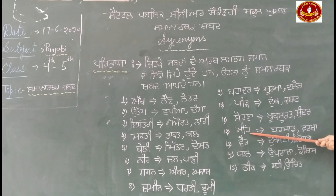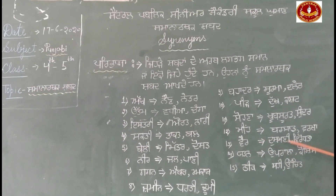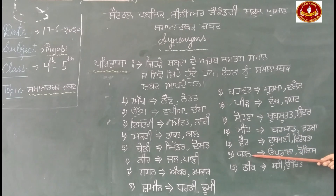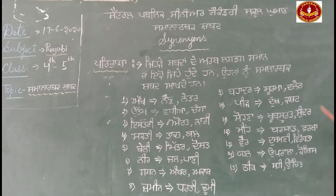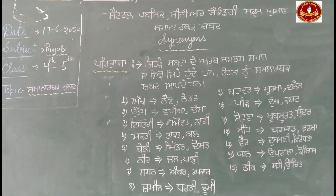ਨੰਬਰ 12: ਬਰਸਾਤ, ਮੀਂਹ, ਵਰਖਾ। ਨੰਬਰ 13: ਵੈਰ, ਦੁਸ਼ਮਣੀ, ਵਿਰੋਧਤਾ। ਨੰਬਰ 14: ਜਤਨ, ਉਪਰਾਲਾ, ਕੋਸ਼ਿਸ਼। ਨੰਬਰ 15: ਠੀਕ, ਸਹੀ, ਉਚਿਤ। ਇਹ ਸਾਰੇ ਸ਼ਬਦ ਸਮਾਨ ਅਰਥਾਂ ਵਾਲੇ ਹਨ - Synonyms।